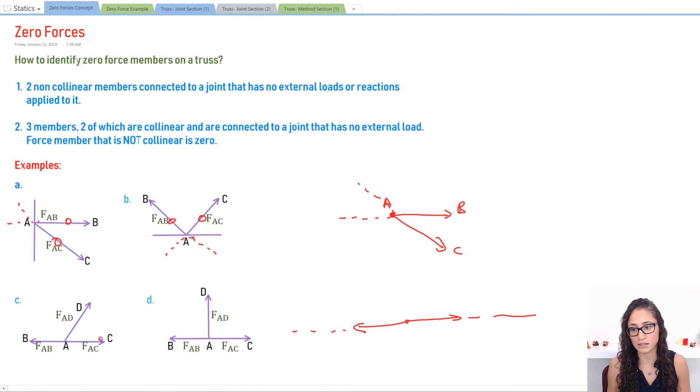If we look at C, these members are collinear because they act on the same line of action. Now AD is going to be zero because AD is not acting on the same line as AB and AC, and that's why AD is going to be zero. So remember this: the member that is not collinear is the member that's zero. This is very important.